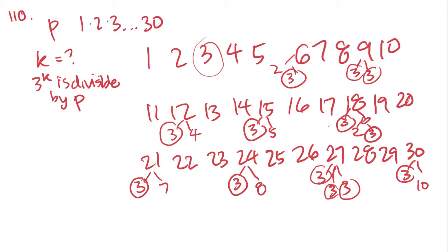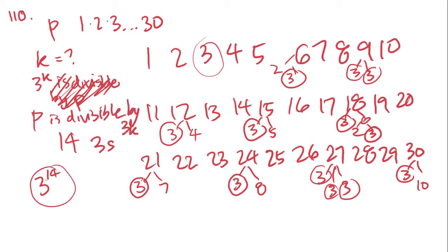Now we just add them up: 1, 2, 3, 4, 5, 6, 7, 8, 9, 10, 11, 12, 13, 14. Fourteen 3's. That means 3 to the 14th power is the maximum amount that p is divisible by. 14 is answer choice C.